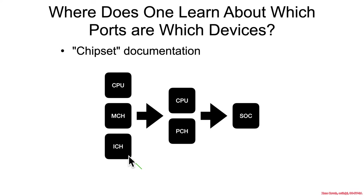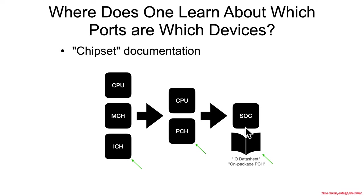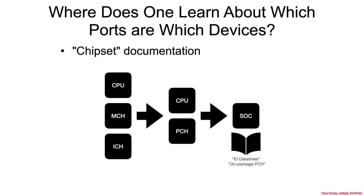Ports are generally in ICH data sheets where systems have the older architecture, PCH data sheets where they have the newer one. And for things that look more SoC-ish, some generations of CPUs have an IO data sheet, although it has started to move back into PCH data sheets. So when we revisit port IO later in the class, this will be an example of where we're going to be looking.